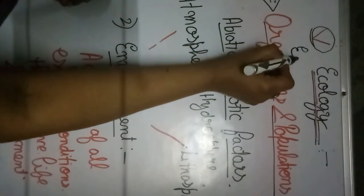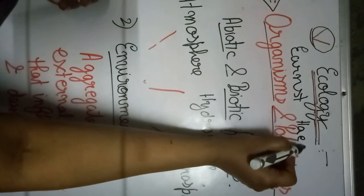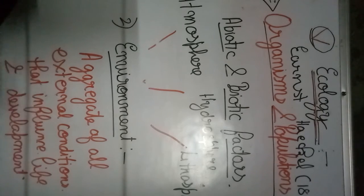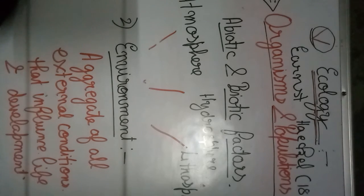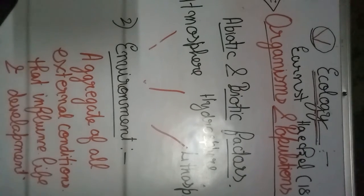An important question that can be asked is: who coined the term ecology? The term ecology was given by Ernest Haeckel in 1869. The term refers to the study of the interrelationship between living organisms and their physical and biological environment. In the next video we will study about the level of organization.